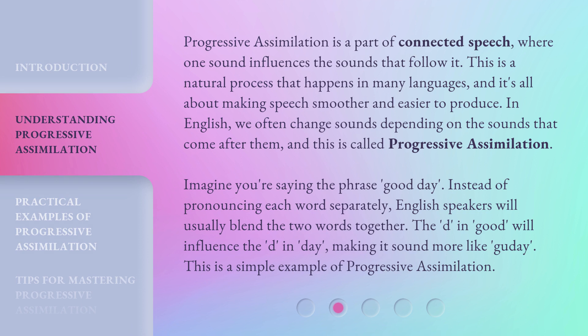Progressive assimilation is a part of connected speech where one sound influences the sounds that follow it. This is a natural process that happens in many languages, and it's all about making speech smoother and easier to produce. In English, we often change sounds depending on the sounds that come after them, and this is called progressive assimilation. Imagine you're saying the phrase 'good day.' Instead of pronouncing each word separately, English speakers will usually blend the two words together. The 'd' in 'good' will influence the 'd' in 'day,' making it sound more like 'good day.' This is a simple example of progressive assimilation.